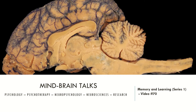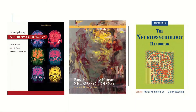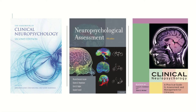Today let's talk about the domain of memory and learning. Memory and learning is a domain that is very important in clinical neuropsychology because there are several neuropsychological conditions that have memory impairments. It's very common to see individuals that have difficulties in memory. Let's see the manuals I recommend: the first is the Principles of Neuropsychology, the second is the Fundamentals of Human Neuropsychology, the third is the Neuropsychology Handbook, the fourth is Clinical Neuropsychology, the fifth is the Neuropsychological Assessment, and the sixth is Clinical Neuropsychology.